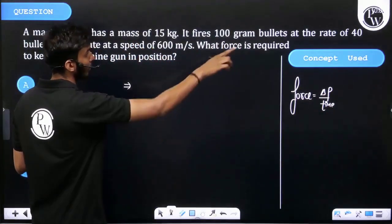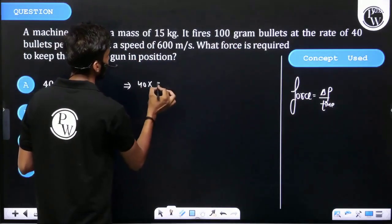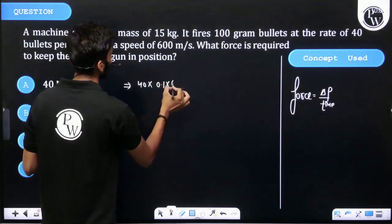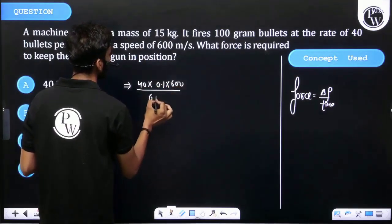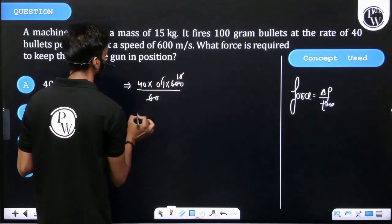Then we can write: number of bullets is 40, mass is 100 grams, that is 0.1 kg, velocity is 600 meters per second, time is per minute, that means 60 seconds. Then 60, 10, 0.1 cancel out. The force on the bullet is equal to 40 Newtons.